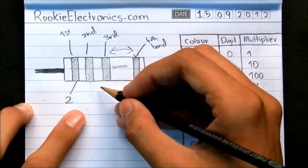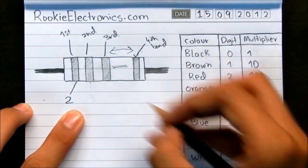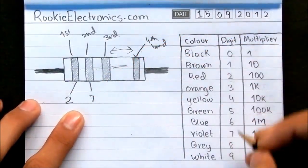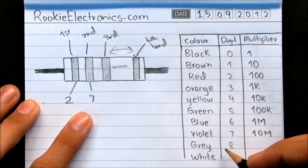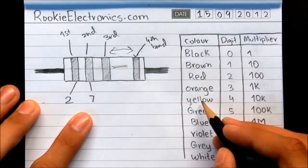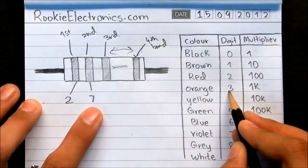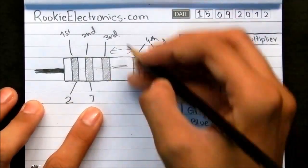The 2nd band is violet. That is 7. And the 3rd band is orange. So now here you write the 3rd band is multiplier.